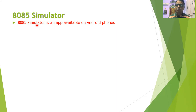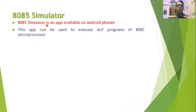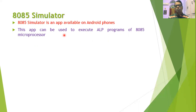Since access to laboratories is not available nowadays, and since simulator apps are available, it is possible to execute these assembly language programs using the 8085 simulator app. The 8085 simulator is an app available on Android phones that can be used to execute assembly language programs written for the microprocessor 8085.